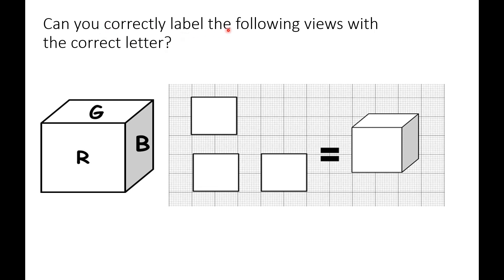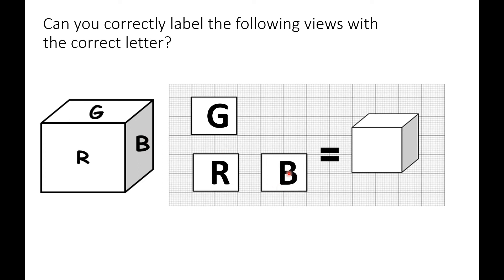Can you correctly label the following views with the correct letter? Here we have the letter R in the front, G at the top, and B at the side. Now place the letters on these boxes — we have the front, the top, and the side view. Letter G must be at the top view, letter R on the front view, and lastly on the side view we have the letter D.